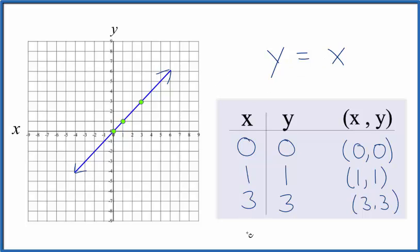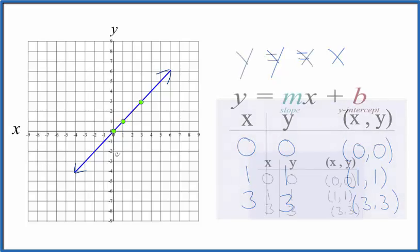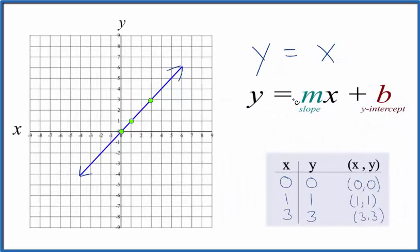And if you kept putting values in for x, you get values for y and those points would be on our line here. Let's take a look at slope intercept formula real quick. So we have y equals mx plus b. Up here we have y equals x. So we don't have a b. Let's call that 0.